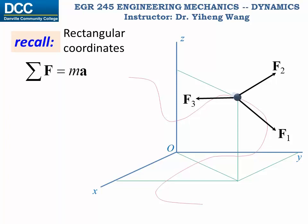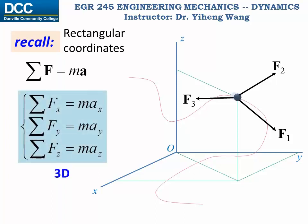If you recall, for particle kinetics, the equation of motion is simply Newton's second law: the resultant force acting on the particle equals its mass times the acceleration vector. The acceleration vector has the same direction as the resultant force. When studied in a 3D rectangular coordinate system, this vector equation becomes three scalar equations — the resultant force along x, y, or z equals mass times acceleration along x, y, or z respectively.